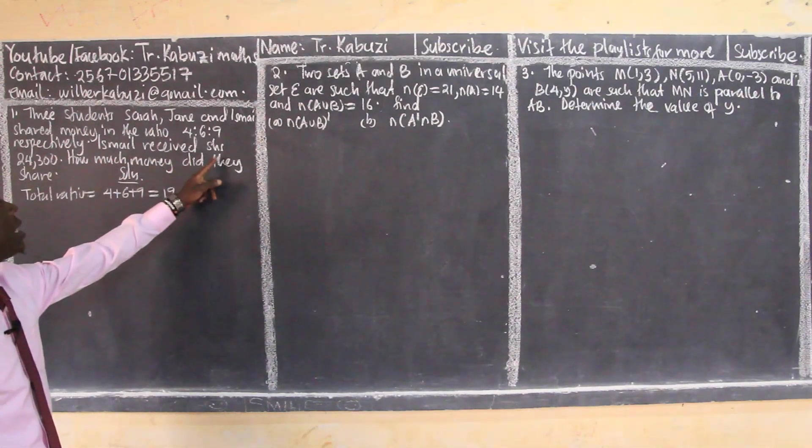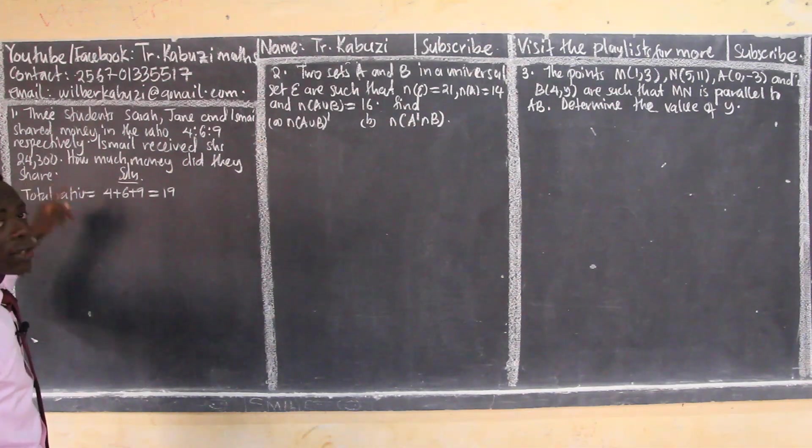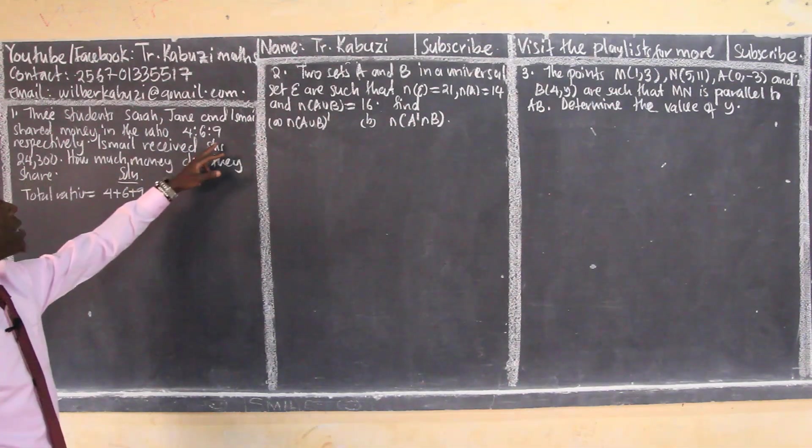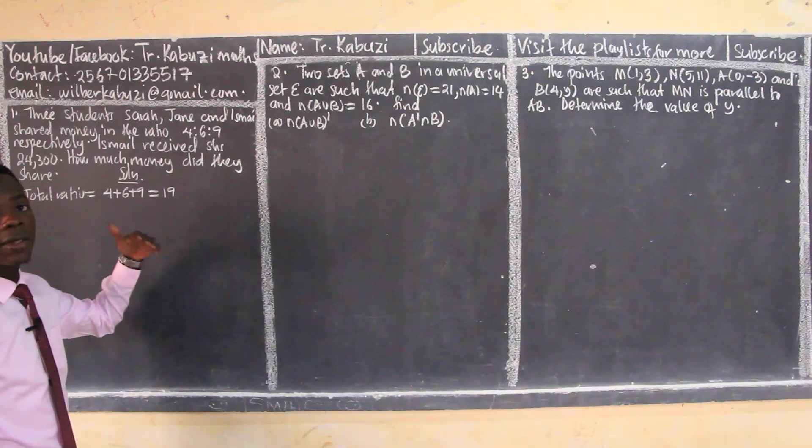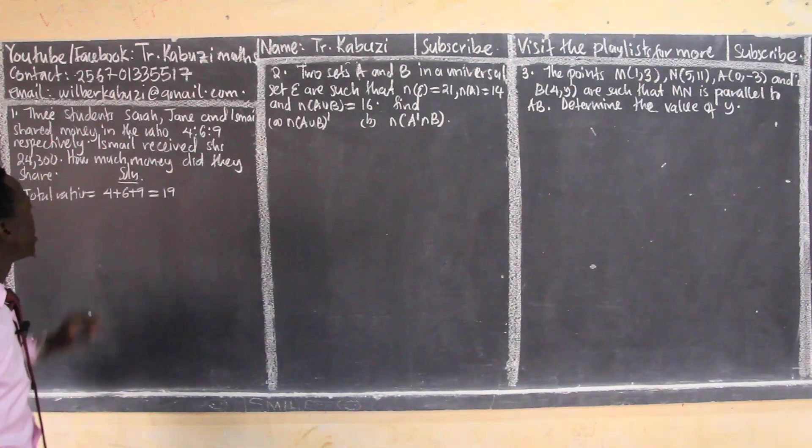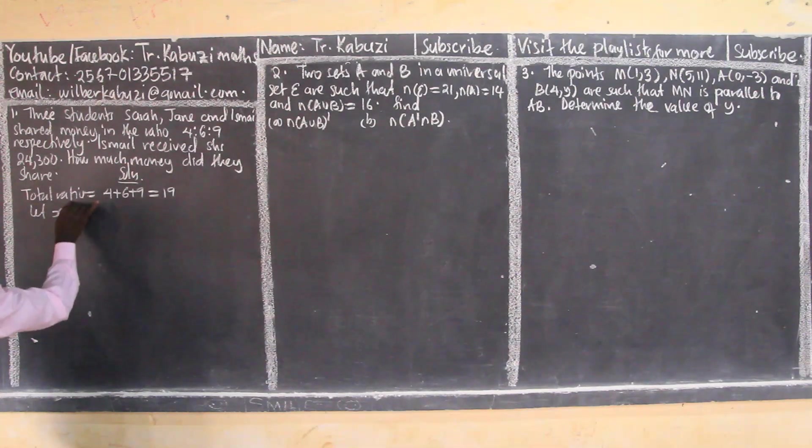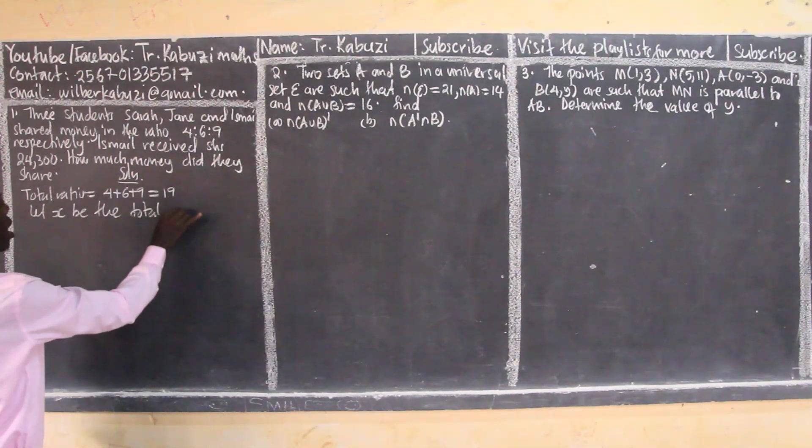Now they are telling me that Isma received the shillings. If I know what Isma's ratio was over the total, times the amount, I'll be getting this. Let x be the total amount.